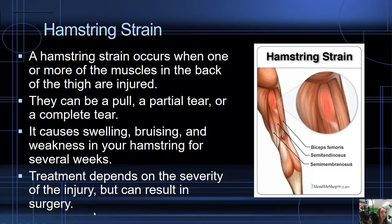Then we have the hamstring strain. It occurs when one or more of the muscles in the back of the thigh are injured — you can see in the picture here the three muscles in the back of your thigh. It can be a pull, a partial tear, or a complete tear. It causes swelling and bruising, and depending on how severe your injury is, you might have to get surgery.